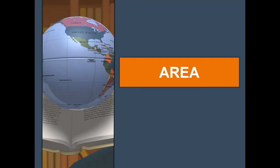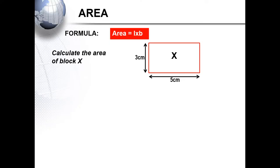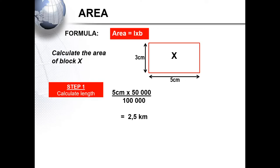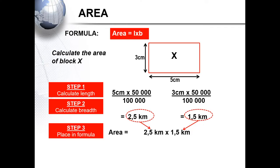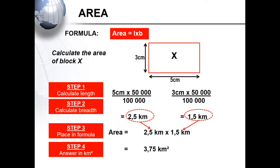Moving on to area. Area's formula is length times width. If you have to calculate the area of block X, you first use your length measurement of 5 centimeters to get 2.5 kilometers, then substitute your breadth measurement into your distance formula. Placing into your area formula gives an answer of 3.75 kilometers squared. Read your questions very carefully — some questions may ask for area in meters squared. Be aware of whether you are on a topographic map or orthophoto map.